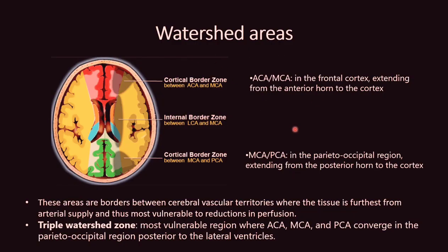Watershed areas are important because they are borders between cerebral vascular territories where tissue is furthest from arterial supply and most vulnerable to reductions in perfusion. The cortical border zone between the ACA and MCA territory lies in the frontal cortex extending from the anterior horn to the cortex. The cortical border zone between the MCA and PCA territory lies in the parieto-occipital region. The internal border zone lies between the lenticulostriate and MCA territory. The triple watershed zone is the most vulnerable region where these three territories converge in the parieto-occipital region posterior to the lateral ventricles.